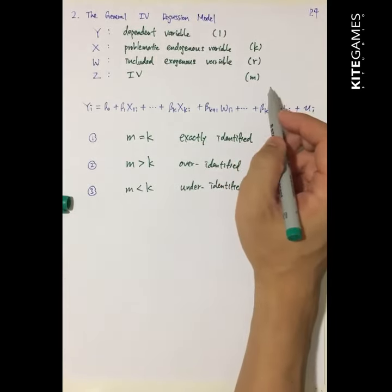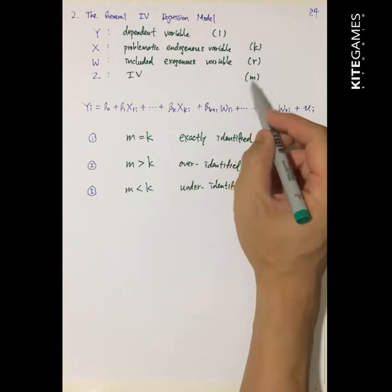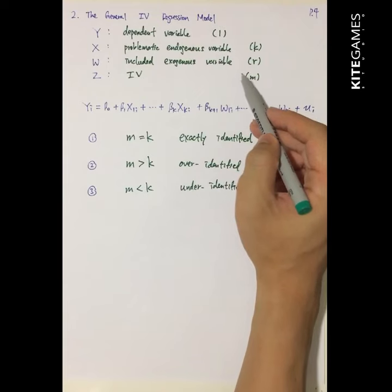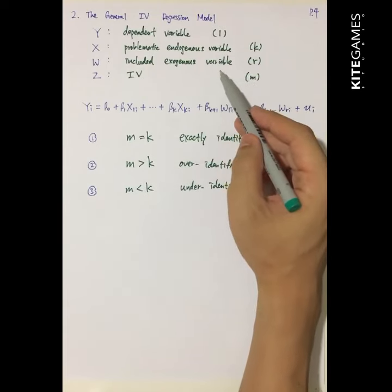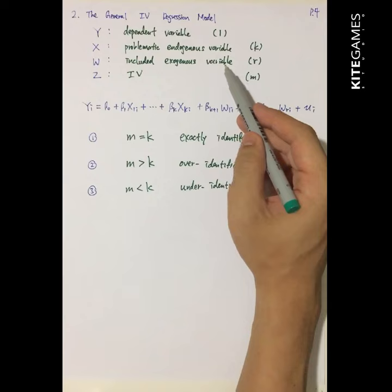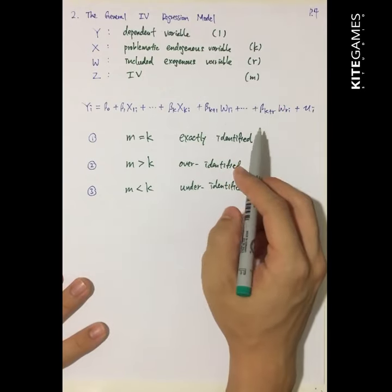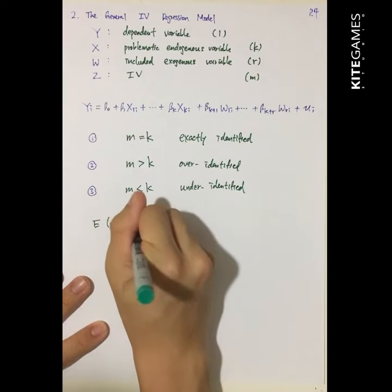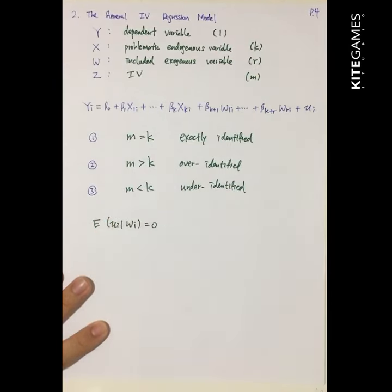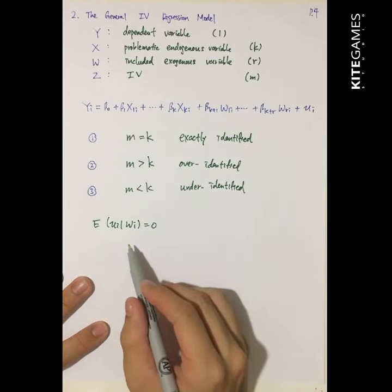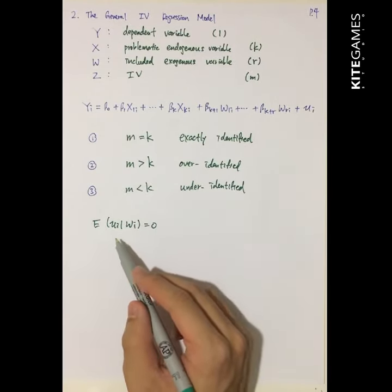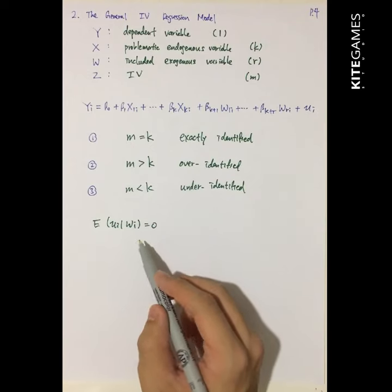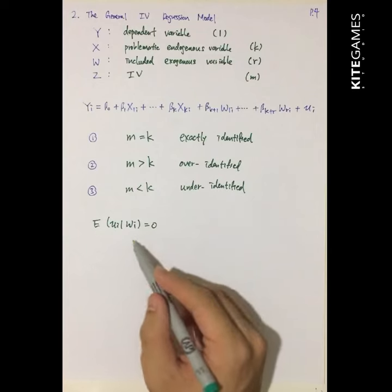We have finished discussing the IV and the endogenous variables. What are the exogenous variables? The included exogenous variables are simply some extra variables with the property that E[u_i | w_i] equals zero. If the expectation of u given w is not zero, we replace w with x and need to add one more IV.